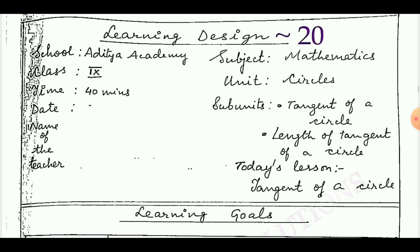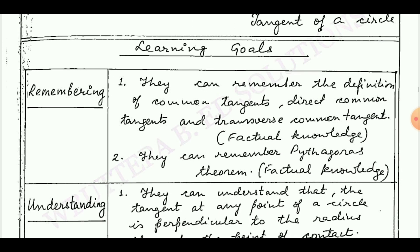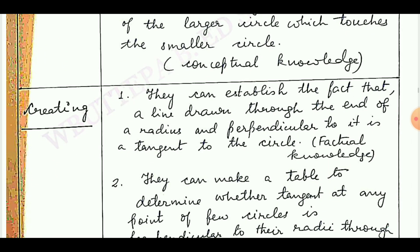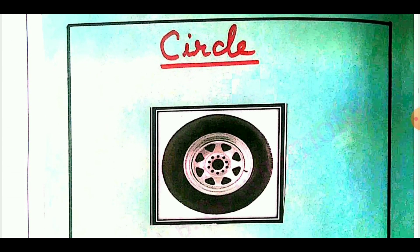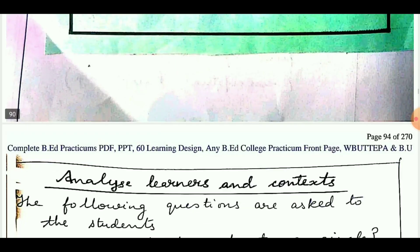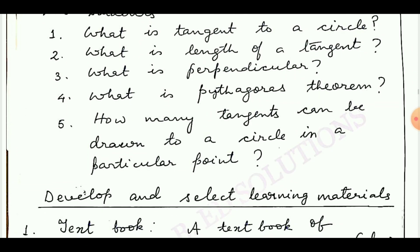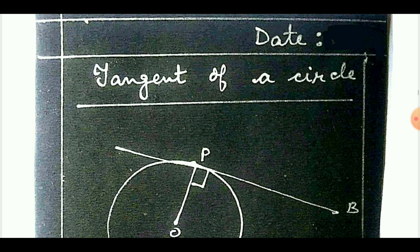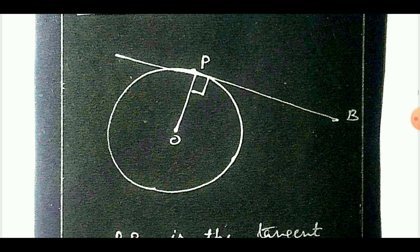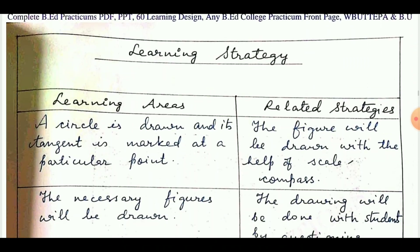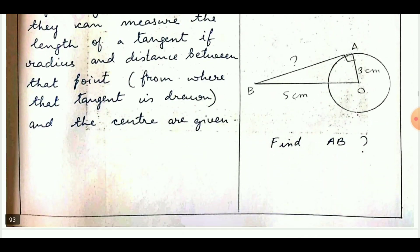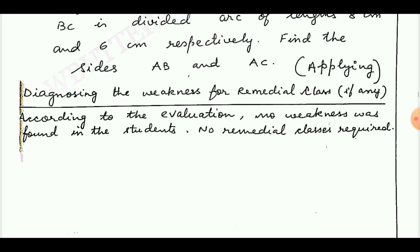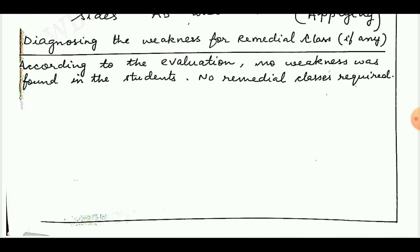Learning design number 20 is taken from Class 9. Learning goals are remembering, understanding, applying, analyzing, evaluating, and creating. Next: analyze learner and context, develop and select learning materials — including blackboard work — then learning strategy, design for evaluation, and diagnosing the weakness for remedial class.